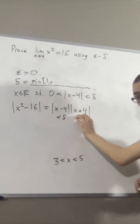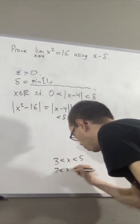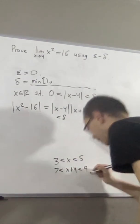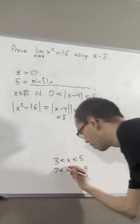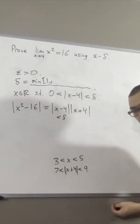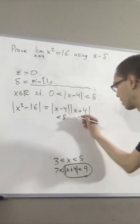What does that tell us about x plus 4? Well, if we add 4 on all three sides, we get that x plus 4 lies between 7 and 9, so x plus 4 is positive, which means x plus 4 must be equal to its absolute value. We now see the absolute value of x plus 4 is less than 9.